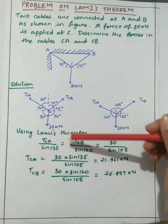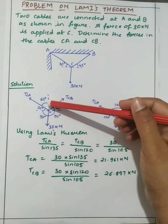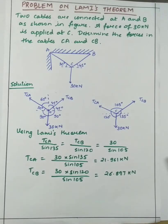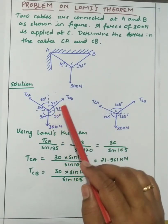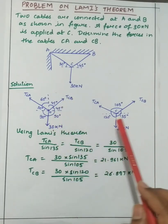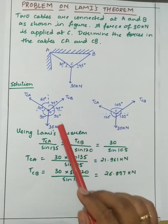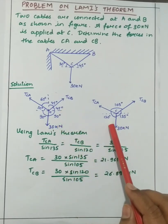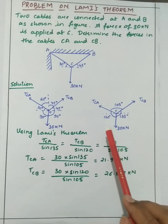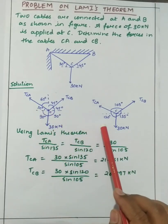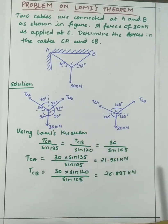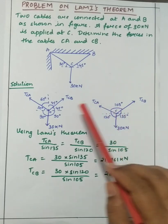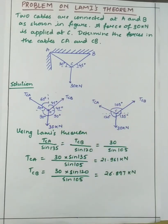Total angle is 180 degrees minus 90 minus 30, we will get 60 degrees. So the total angle between TCB and 30 kilo newton will be 135, that is 90 plus 45. And here between TCA and 30 kilo newton will be 90 plus 30, that is 120 degrees. Then here 60 plus 45 we will get 105 degrees.